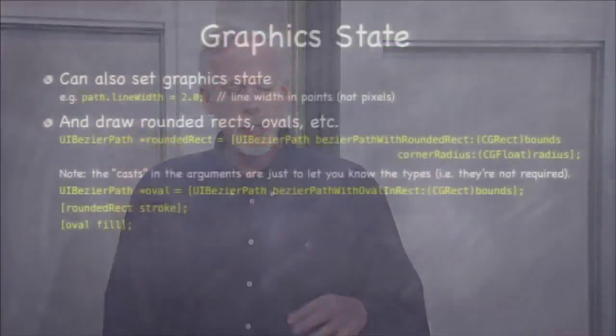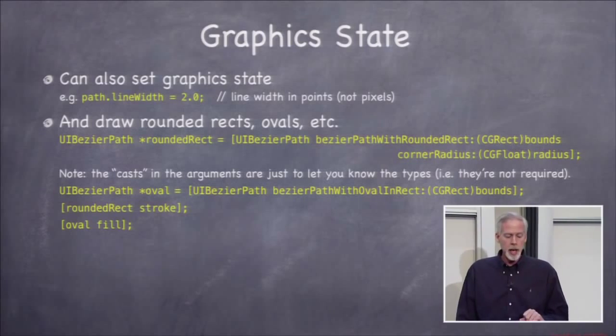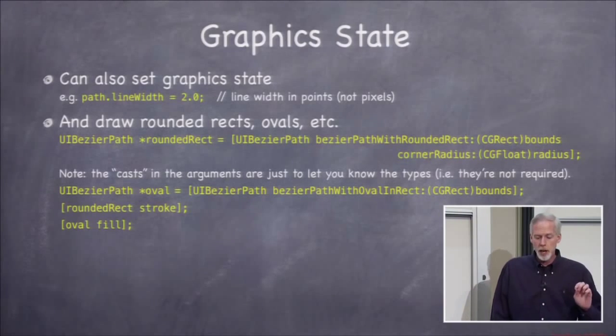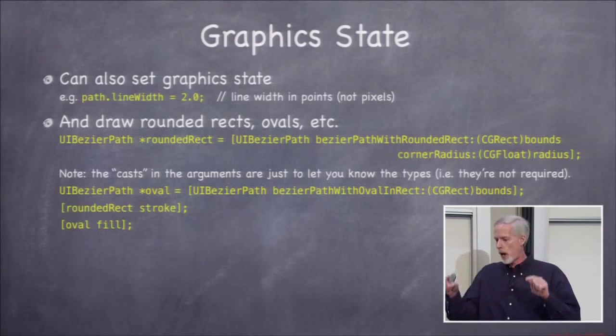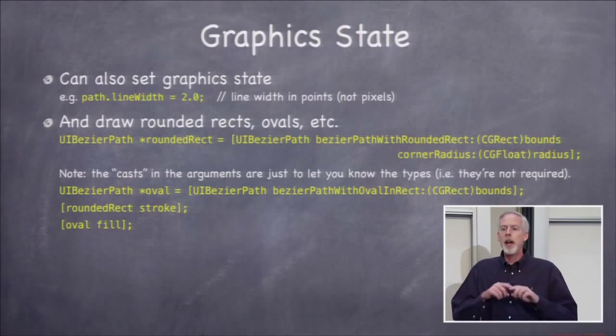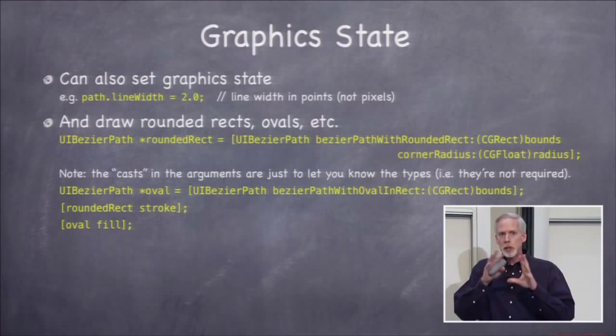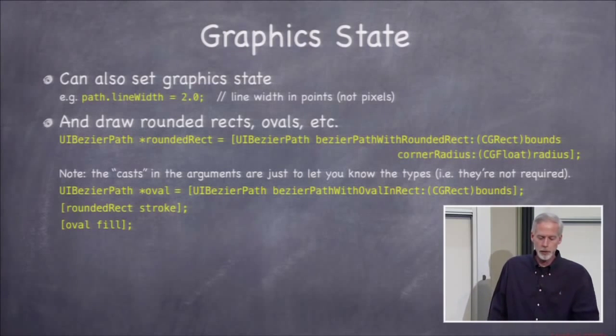UIBezierPath can do much more than simple triangles. You can set line widths, patterns, and all kinds of attributes to make your drawing more interesting. UIBezierPath also has convenient factory methods like bezierPathWithRoundedRect:cornerRadius: which gives you a path that's a rounded rectangle inside certain bounds. There are many other similar methods so you can build more complicated shapes than just repeated lineTo calls.